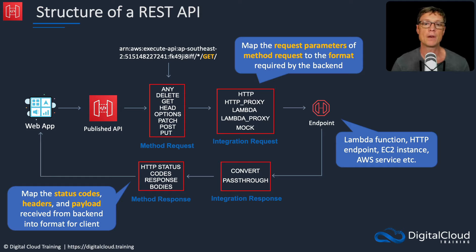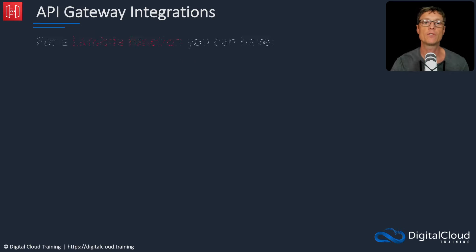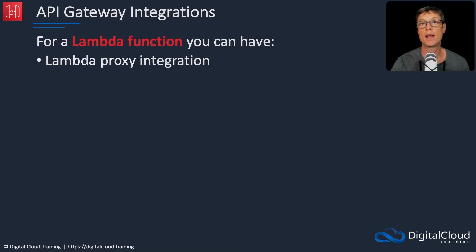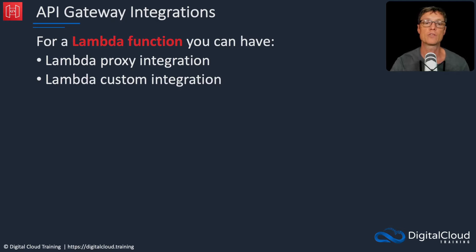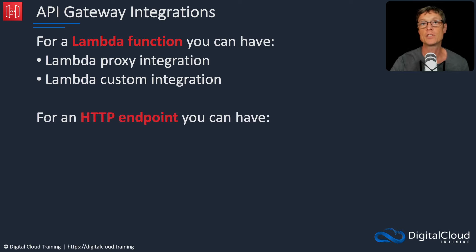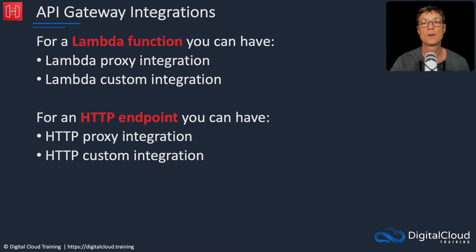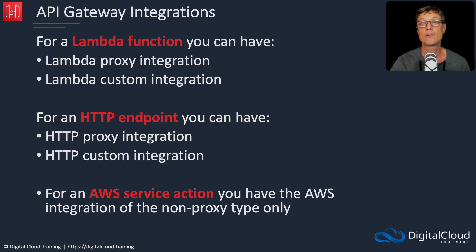With an HTTP API it's slightly different. Instead of a method request, we have routes, and the routes are also integrated into things like Lambda functions. There are a few different types of integration: for a Lambda function, you can have either a proxy integration or a custom integration — the custom gives more flexibility, whereas the proxy passes the request straight through to Lambda. For an HTTP endpoint, you can have an HTTP proxy or a custom HTTP integration. For an AWS service action, you only have the non-proxy type.